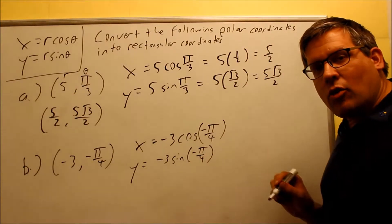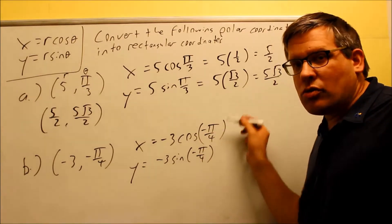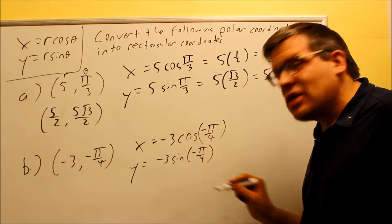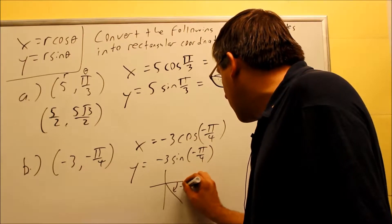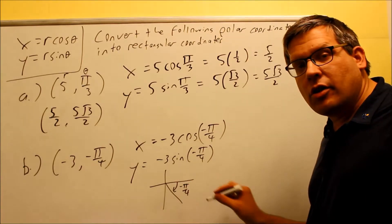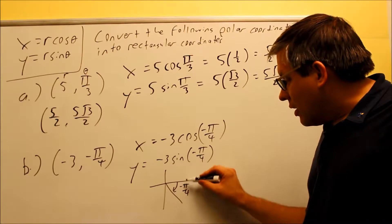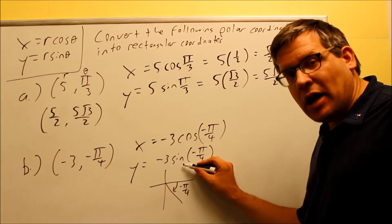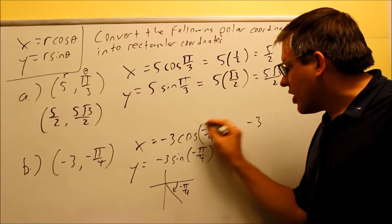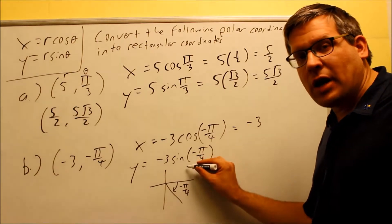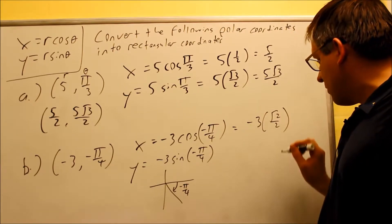There are two ways you can handle the negative angle. You could use the even-odd properties: cosine of negative theta equals cosine of the positive angle, and for sine a negative sign comes out. Or, looking at the unit circle directly, negative pi over 4 is down in the fourth quadrant. Cosine is positive there because negative pi over 4 has the same x value as positive pi over 4. So cosine of negative pi over 4 has the same value as cosine positive pi over 4, which from the table is square root of 2 over 2.